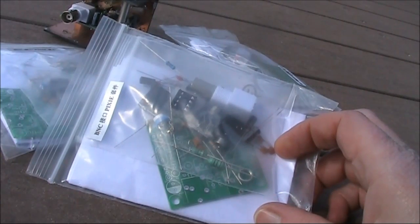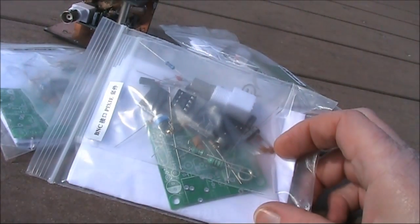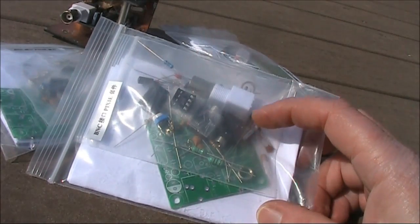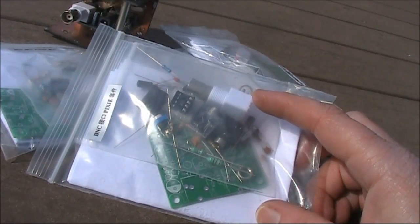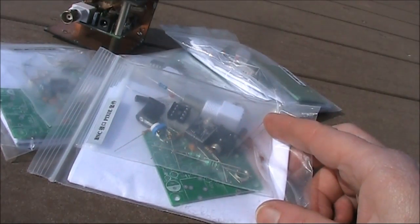This is what you get for your $4 to $6 Pixie kit. The printed circuit board, the components, plugs and sockets, and if you're lucky, a circuit diagram.